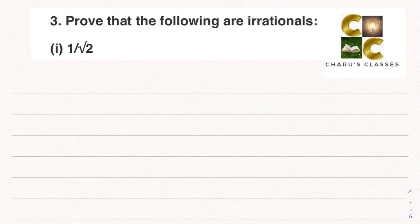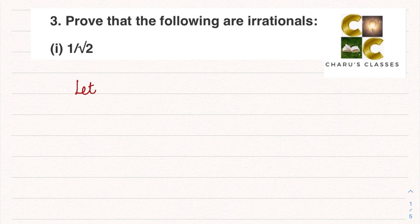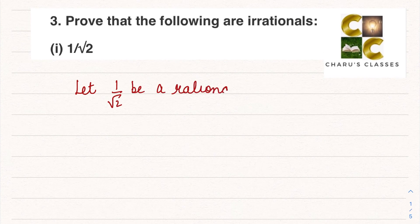Hello students, welcome to Charu's classes. Let's continue Exercise 1.3, Question 3 — Real Numbers Class 10: prove that the following are irrationals. Part 1: 1 by root 2. We will use the contradiction method, so let us assume that 1 by root 2 is a rational number.